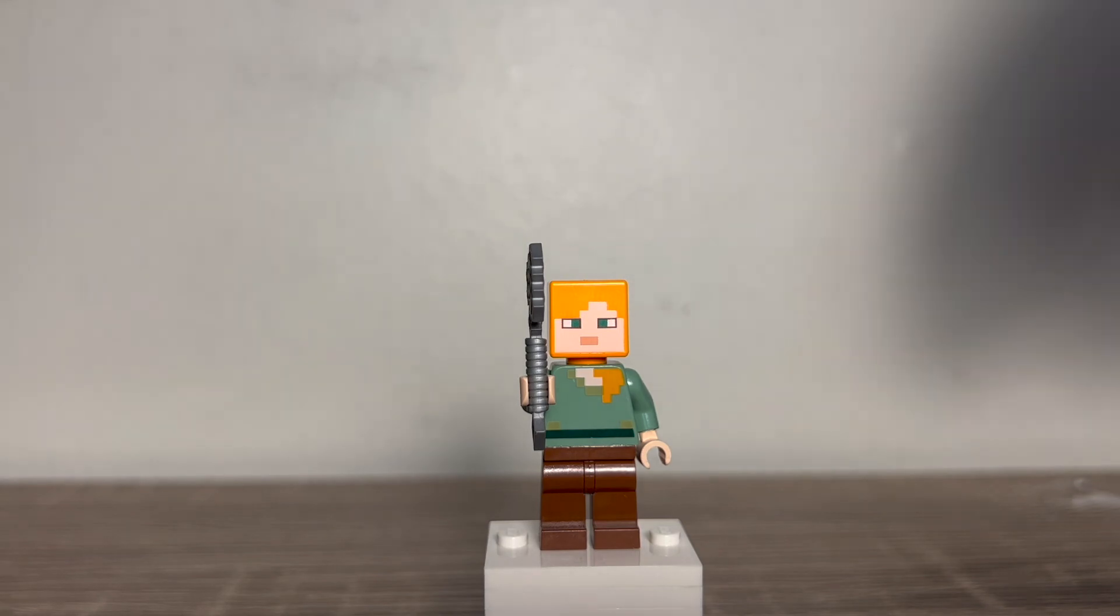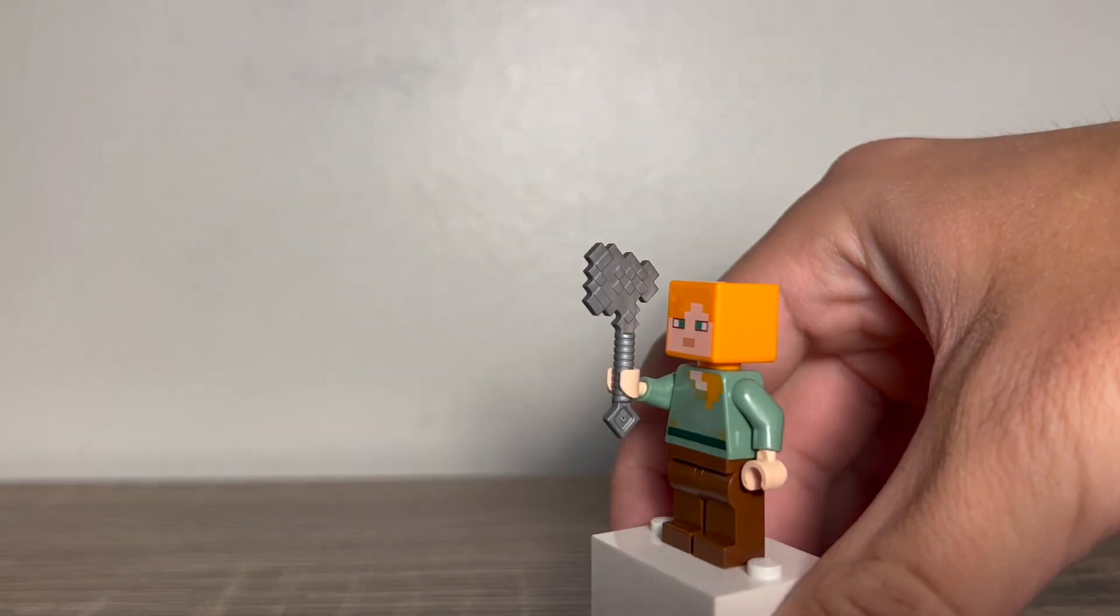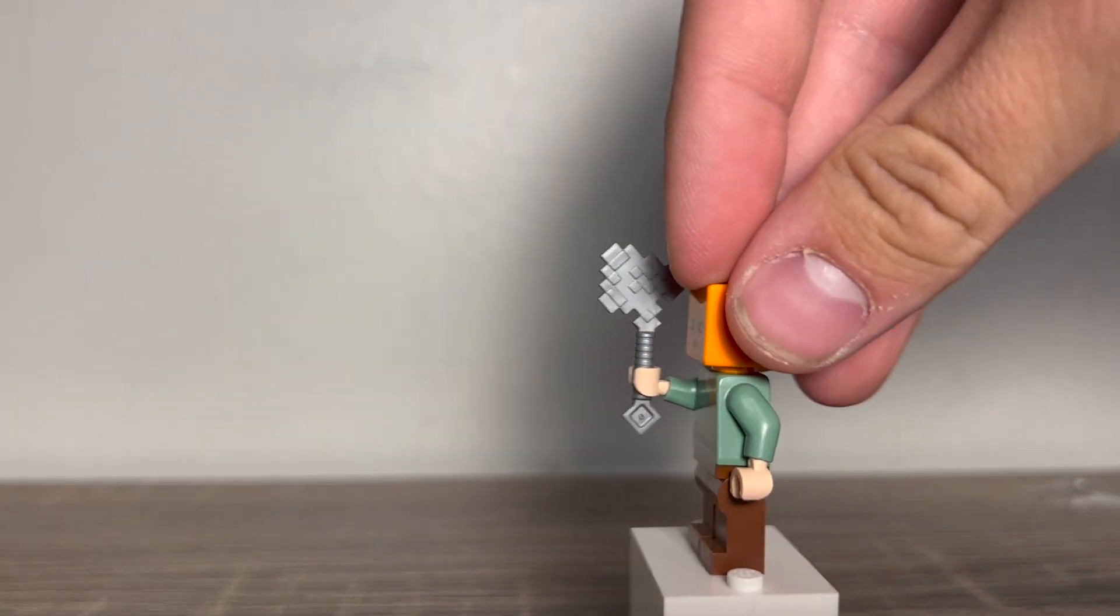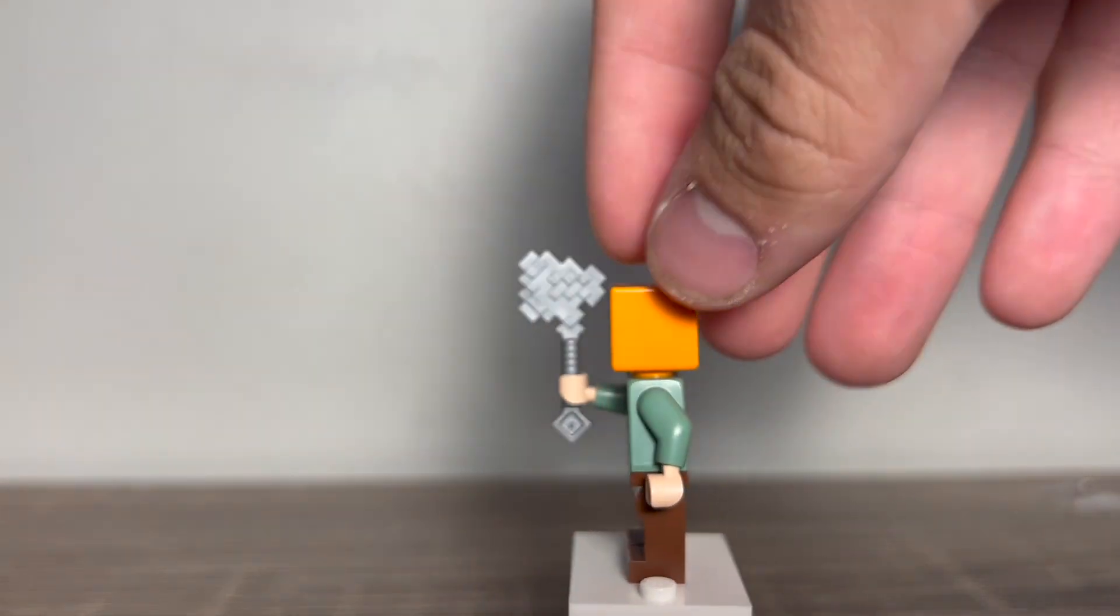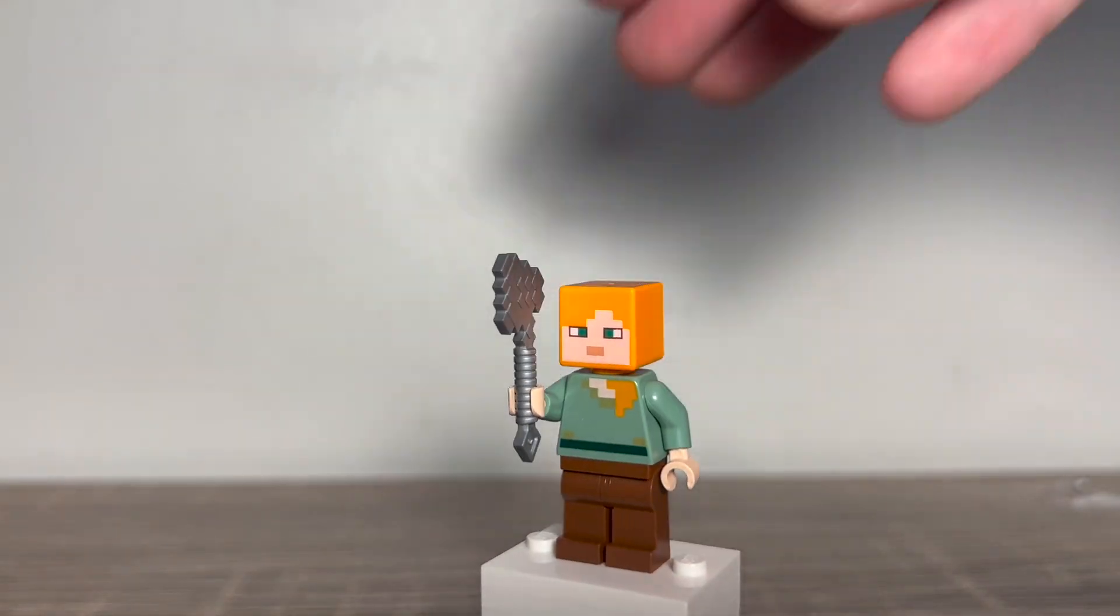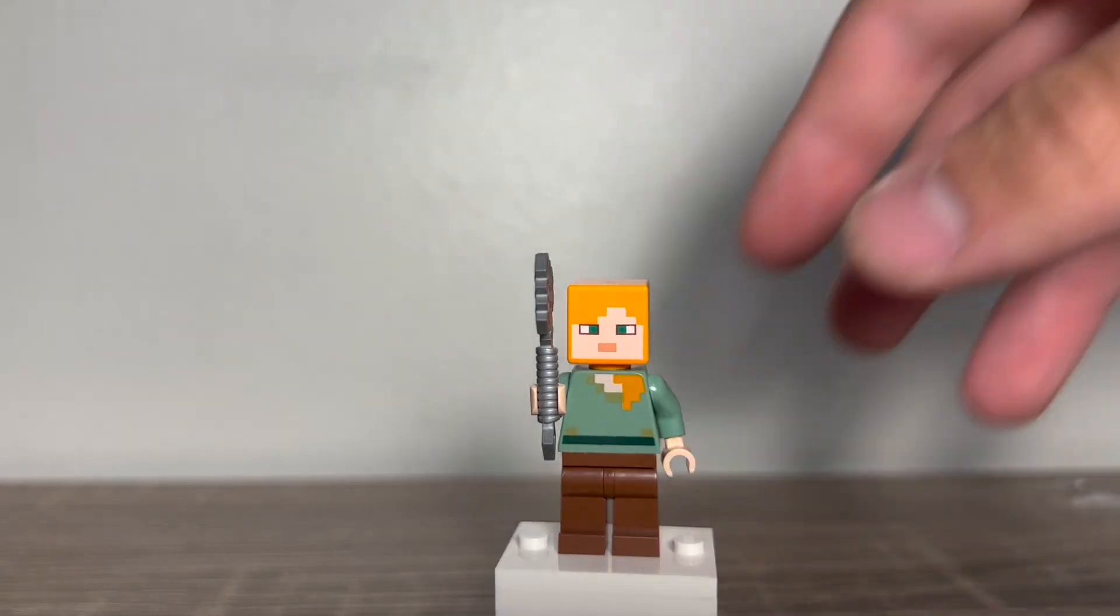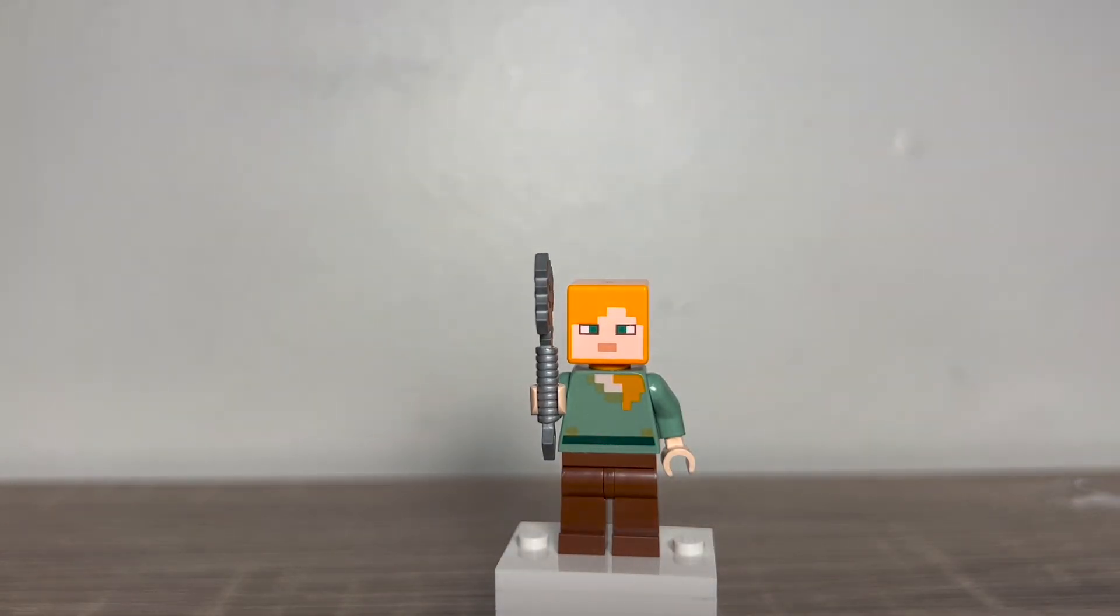So for our first figure we get Alex. We've gotten many of these before. Alex has an Iron Axe. I don't think it's a bad thing that LEGO included Alex. At least it's not in every set now, and they do provide a lot of exclusive minifigures. So I think it's okay.